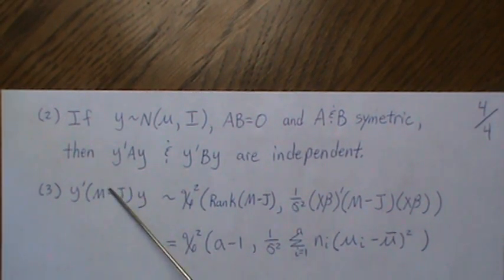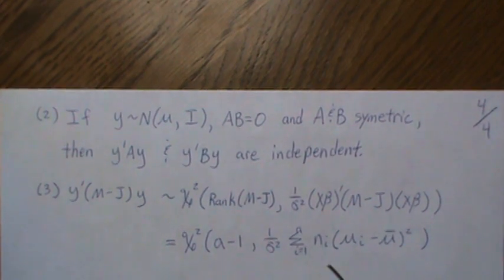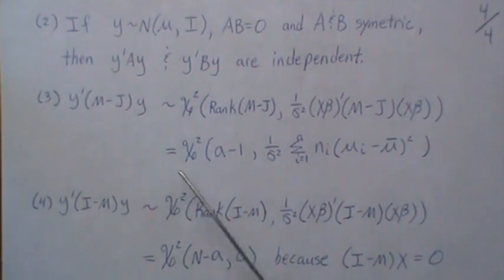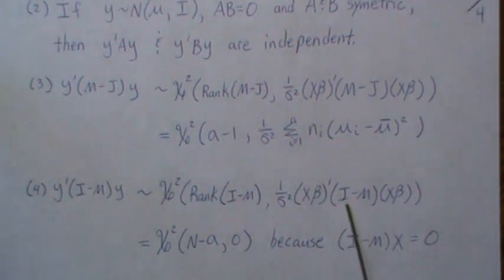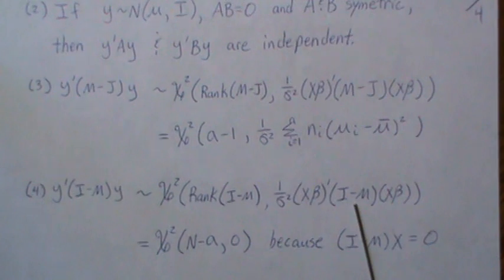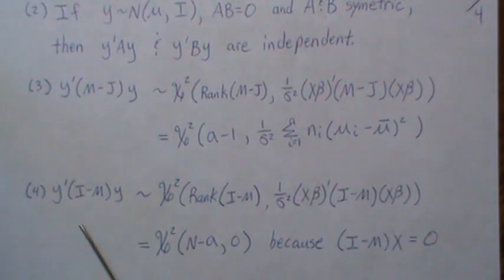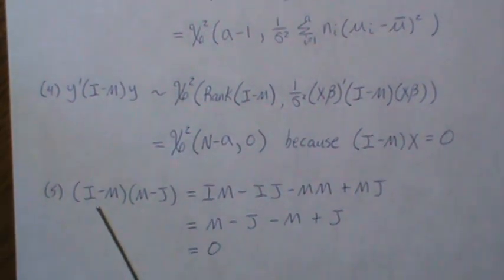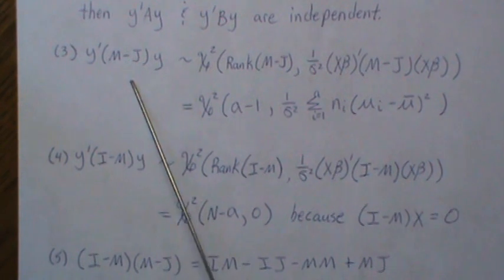Since M−J is a projection matrix, Y'(M−J)Y — the regression sum of squares — is non-central chi-squared with non-centrality parameter μ'(M−J)μ, and that's what I used in the power and sample size video. The residual sum of squares Y'(I−M)Y uses I−M, which projects onto the orthogonal complement of the column space of X, so X'(I−M) = 0, meaning the residual SS is always a central chi-squared. Taking the product (M−J)(I−M) = 0 confirms these two quantities are independent.